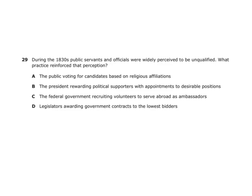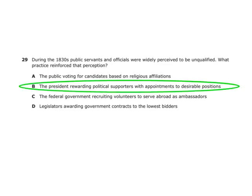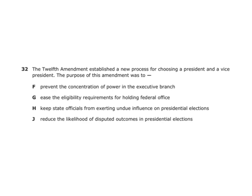During the 1830s, public servants and officials were widely perceived to be unqualified. What practice reinforced this perception? The president rewarding political supporters with appointments to desirable positions — the spoils system. Someone helps you get into the presidential office, then you help them out with a position. This happened back then and still happens today.